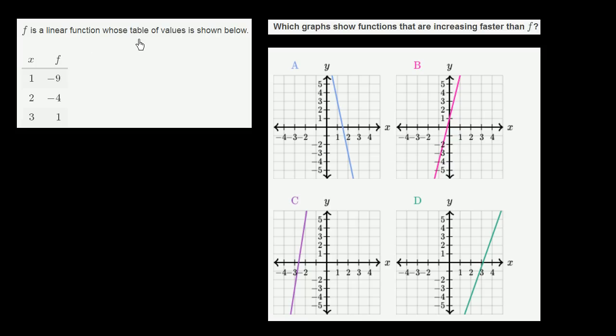F is a linear function whose table of values is shown below. They give us three different x values and the corresponding f of x values. Which graphs show functions that are increasing faster than f?